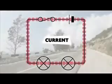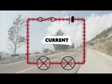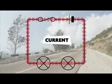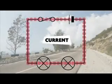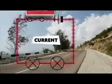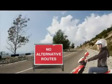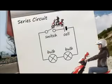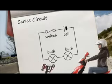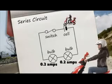Current is flow of moving charge. The more charge flows, the higher the current. In a series circuit, the current flows through each component in turn and there are no alternative routes.